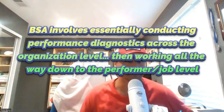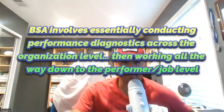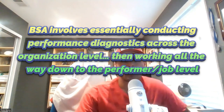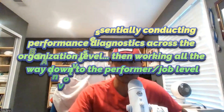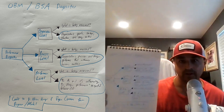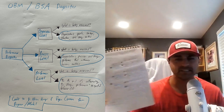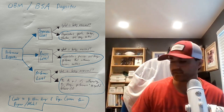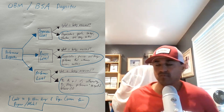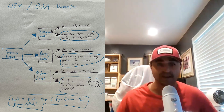BSA — the acronym for Behavioral Systems Analysis — is essentially conducting performance diagnostics across the organization level, and then you work your way all the way down to the performer/job level. In the title, I use the way Dr. Allison directly described it: three levels of analysis. I tried to draw the chart out, and there'll be a specialist course — but let's look at the performance diagnostics at three different levels.